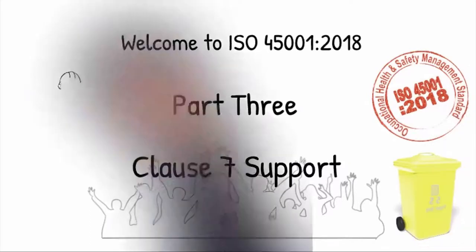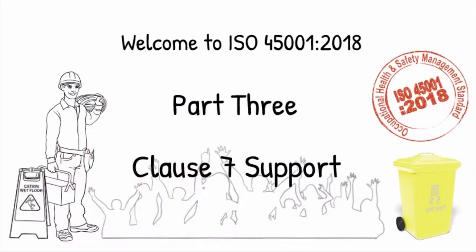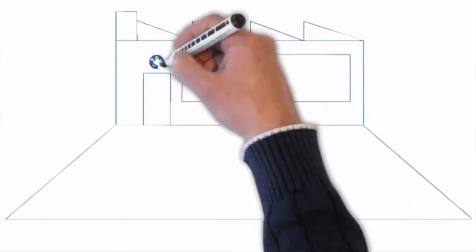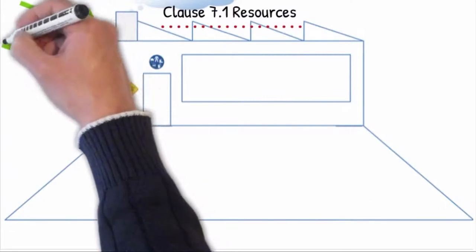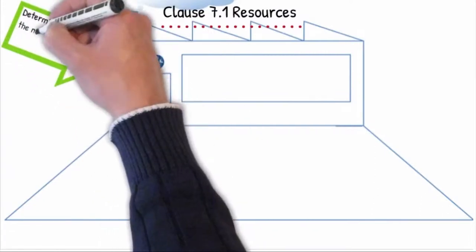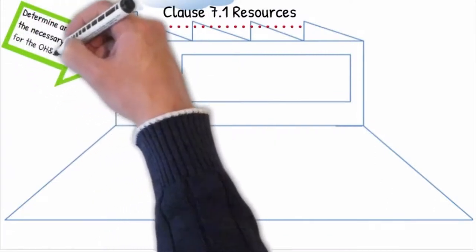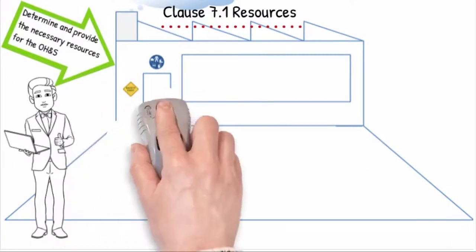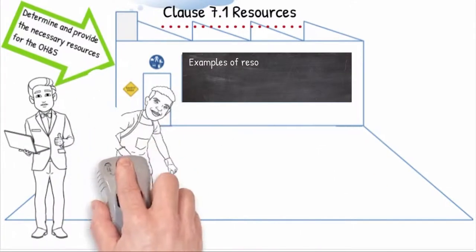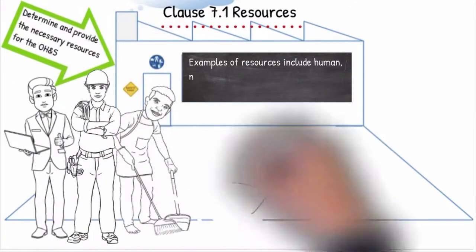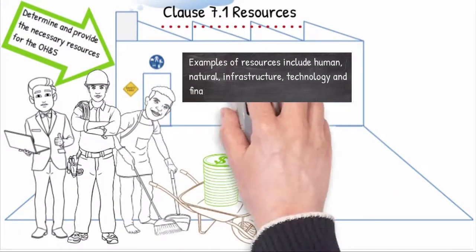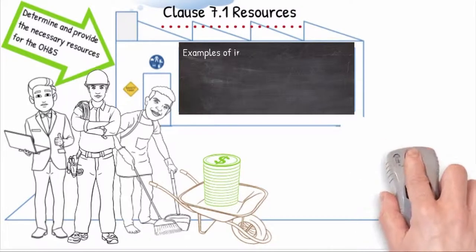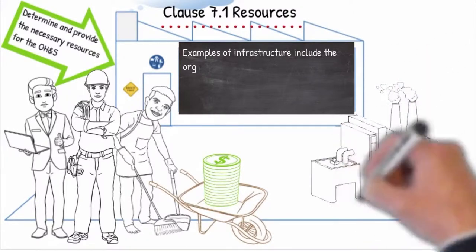Clause 7.1 Resources: Support includes the resources needed for the effective sustainability of the OHS system. The organization shall determine and provide the resources needed for the establishment, implementation, maintenance and continual improvement of the occupational health and safety management system, including human, natural, infrastructure, technology and financial resources. Examples of infrastructure include the organization's buildings,